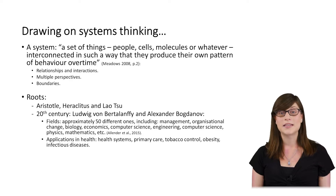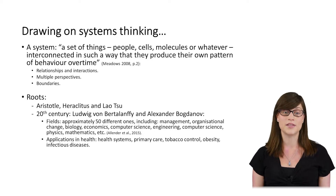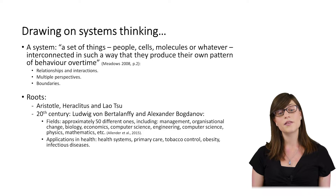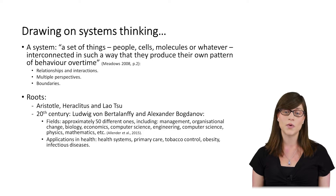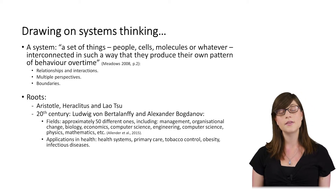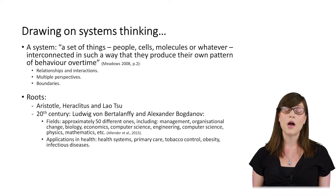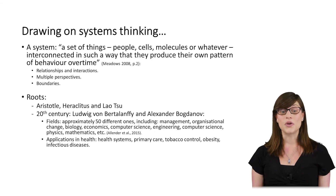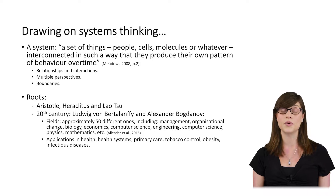It's useful to start with a definition of a system. We particularly like one from Danella Meadows, who defines a system as a set of things — be it people, cells, molecules, or whatever — that are interconnected in such a way that they produce their own pattern of behavior over time. At the core of these definitions is an emphasis on the relationships and interactions between different system elements, and the way that they interact gives rise to different kinds of outcomes, many of which might not be predictable. Systems thinking is not new — it has ancient roots, but has been more recently developed in public health and then for those working at the local setting.